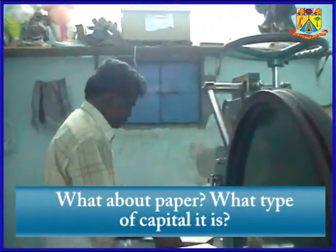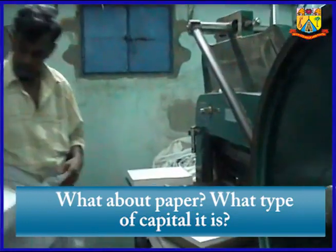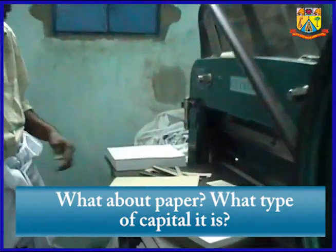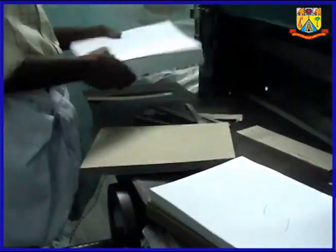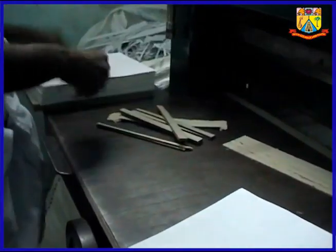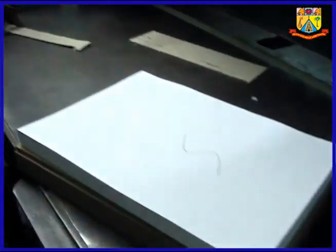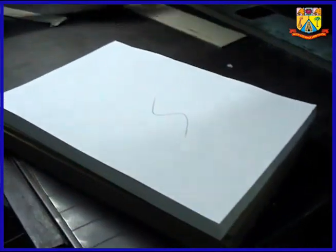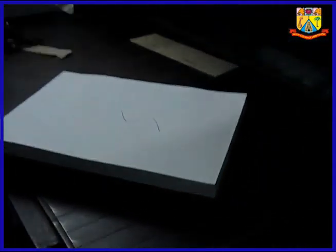What about paper? What type of capital is it? In binding works, machinery is fixed capital, whereas lubricating oil, power to run the machine, labor to operate it, and paper to be cut are all variable capital. To produce the output in an enterprise, there is a proportion of these two types of capital, depending on the type of technology and nature of product.